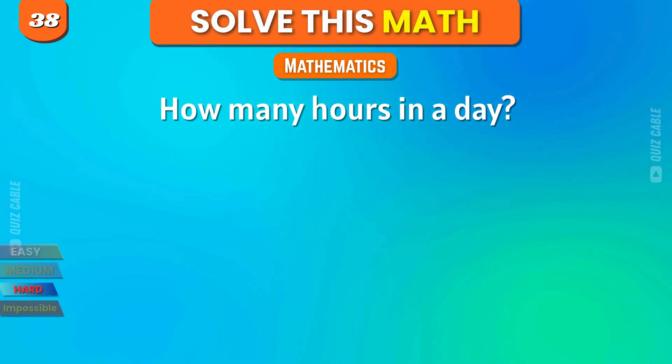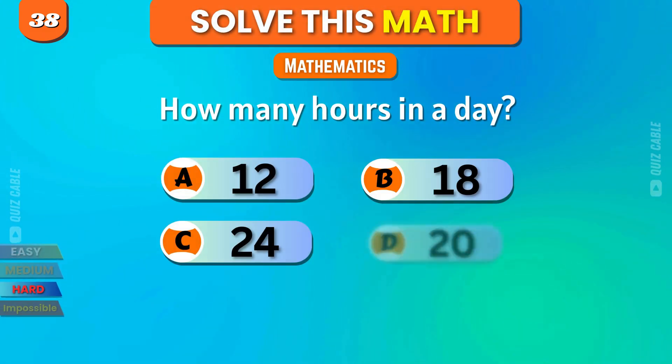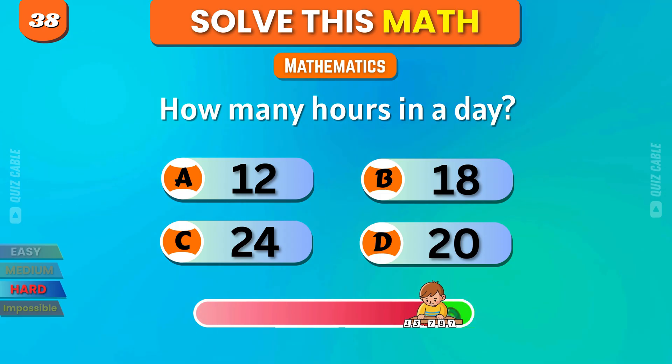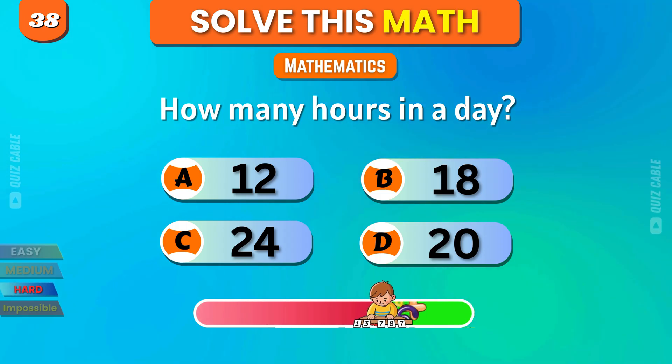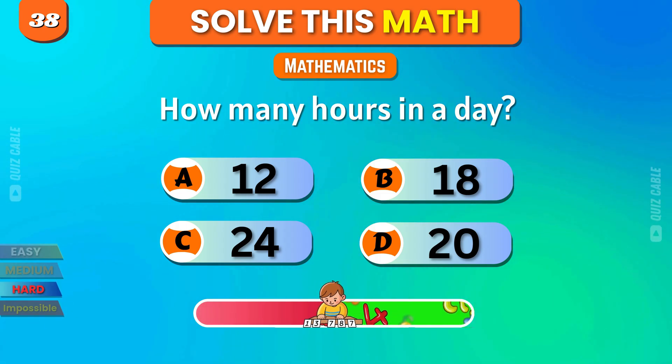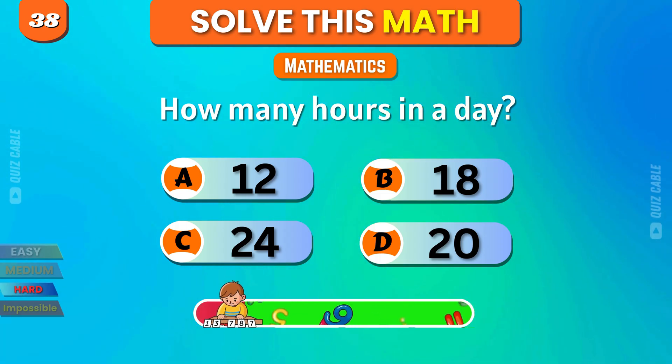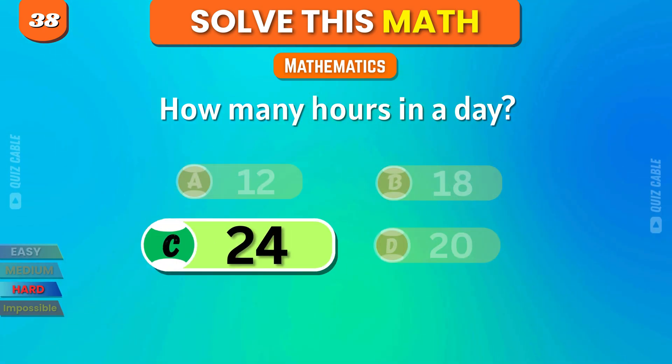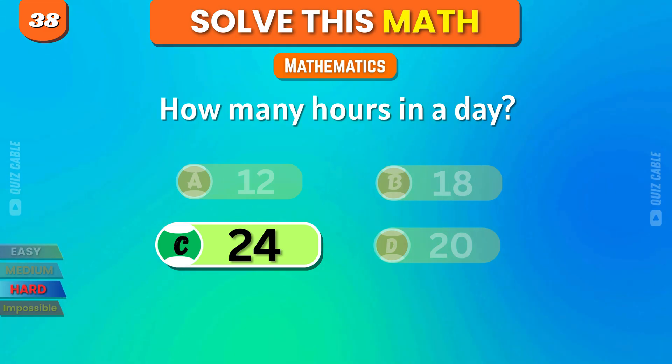How many hours are in a day? 12, 18, 24, 20. Correct, 24.